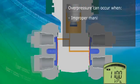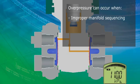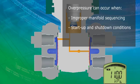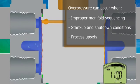Overpressure can occur from improper manifold sequencing, start-up and shutdown conditions, or a sudden process upset.